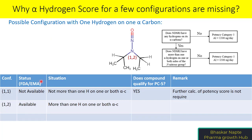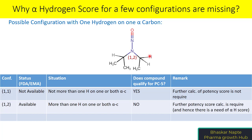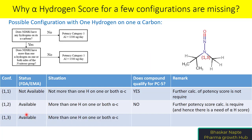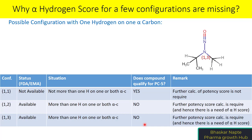The second possible configuration in this group is 1,2. Does this compound fall under potency category 5? No. Since it doesn't fall under category 5, calculation of the alpha hydrogen score is required, and therefore it is provided in the FDA and EMA guidelines. Similarly, the 1,3 configuration also has its alpha hydrogen score available, because this compound again does not fall under potency category 5 and further potency score calculation is required.